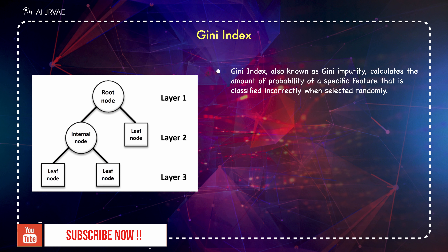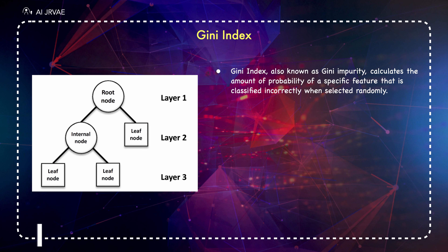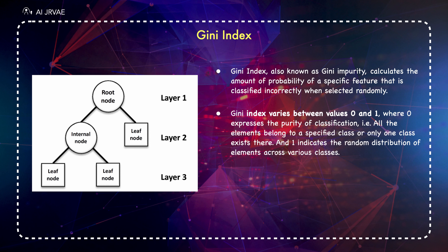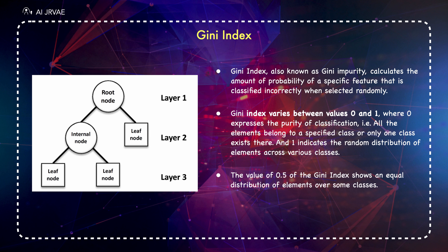The Gini Index, also known as Gini Impurity, calculates the amount of probability of a specific feature that is classified incorrectly when selected randomly. If all the elements are linked with a single class, then it can be called pure. The Gini Index varies between values 0 and 1, where 0 expresses the purity of classification — all elements belong to a specified class or only one class exists — and 1 indicates random distribution of elements across various classes. A value of 0.5 shows an equal distribution of elements over some classes.